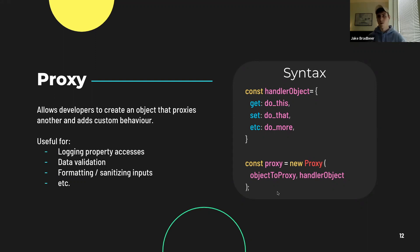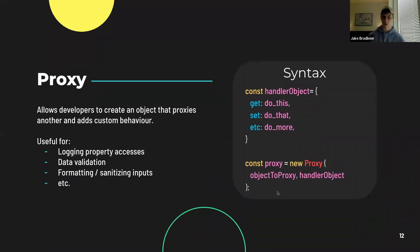On the right-hand side of the screen, you can see the syntax for proxy creation. To proxy an object, you initialize a new object set equal to the Proxy constructor, which accepts as parameters the object you are proxying and a handler object that stores the object operations you're trying to overwrite. These are more commonly known as traps. So whenever I say 'traps', I'm just referring to those object operations.